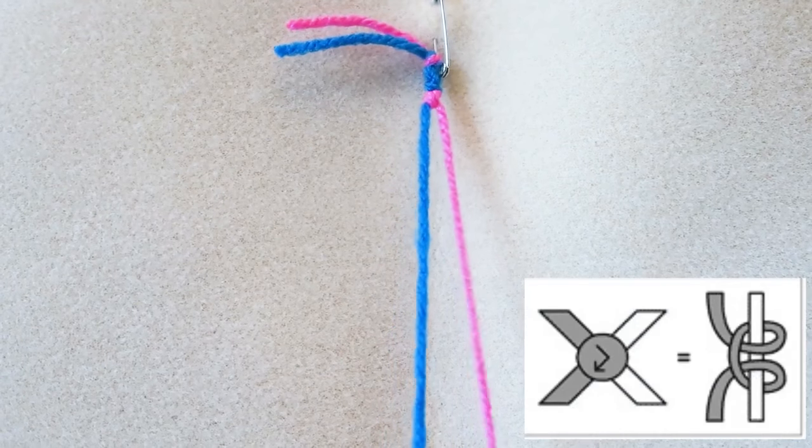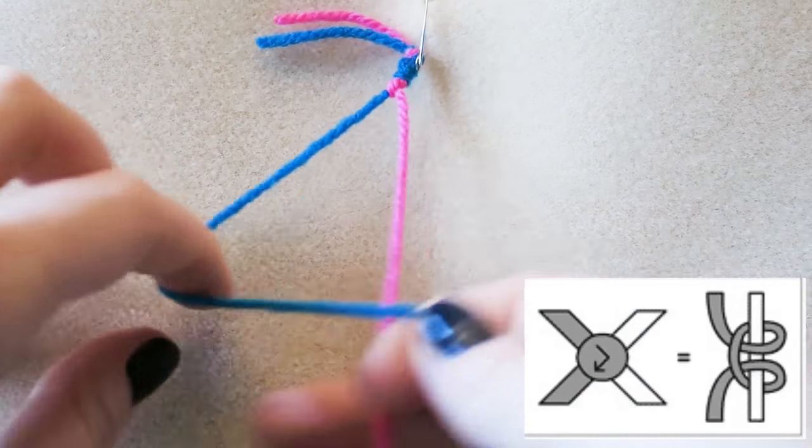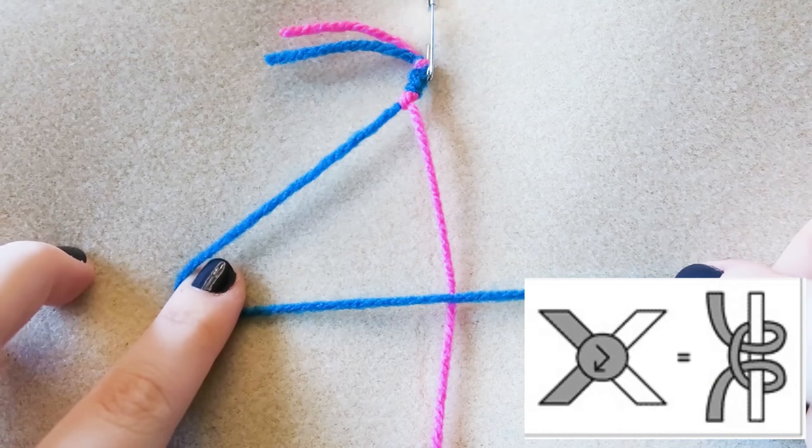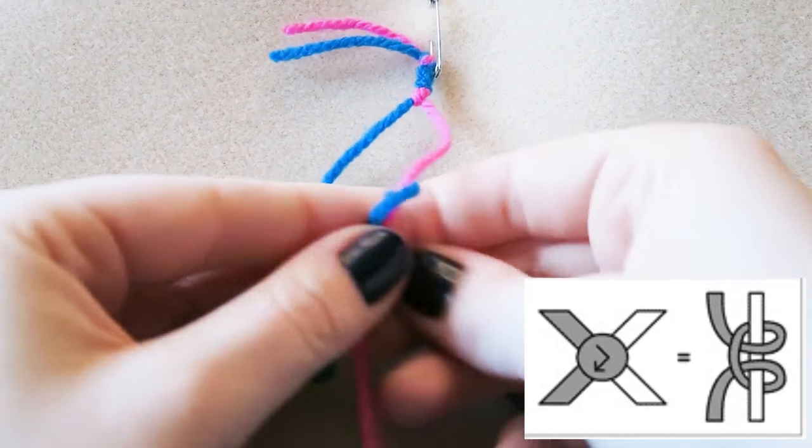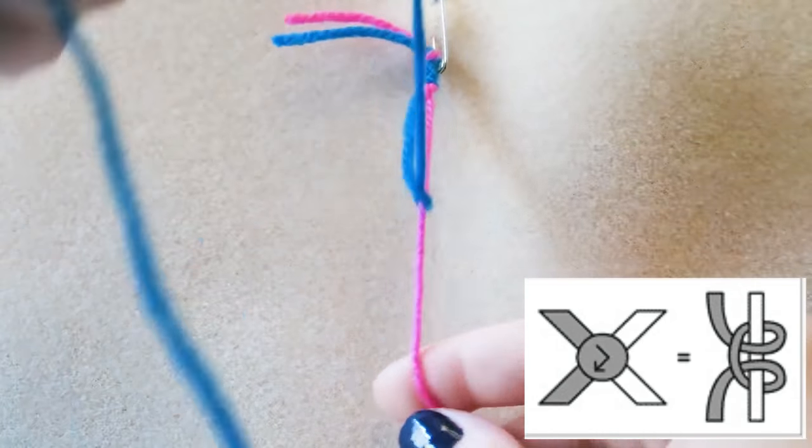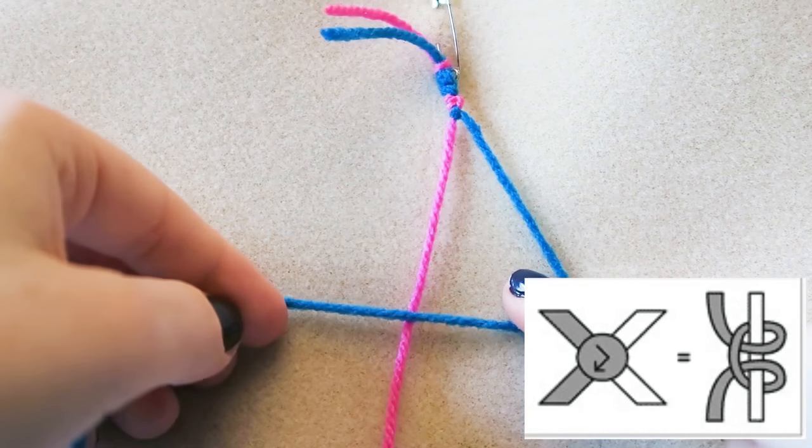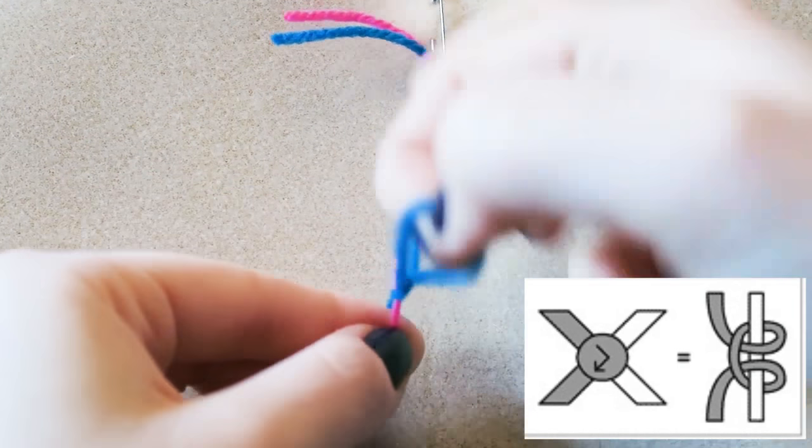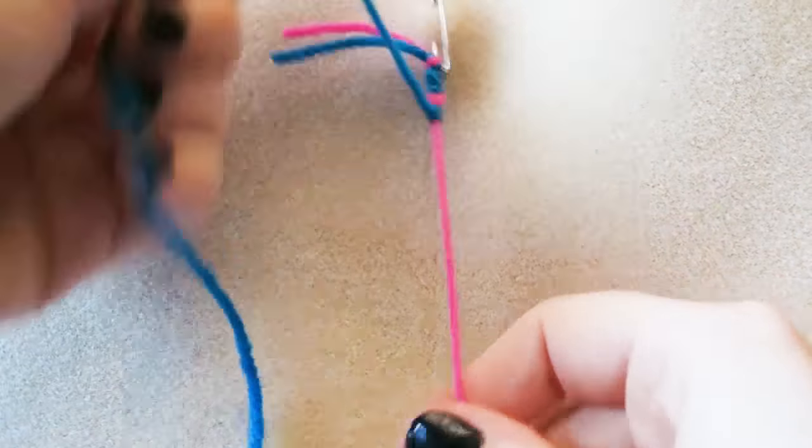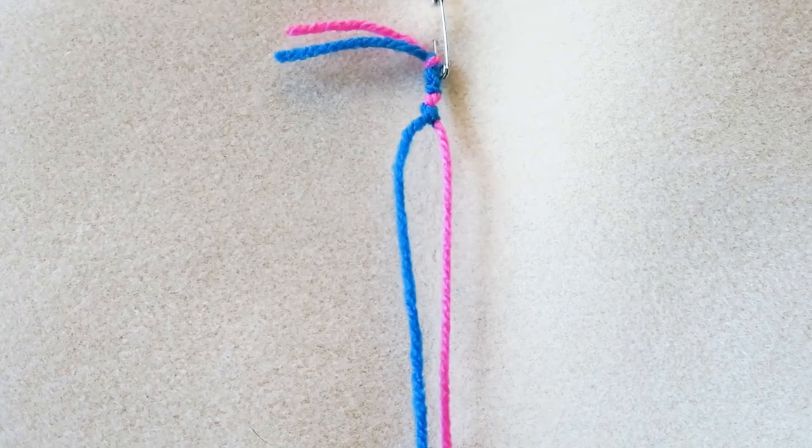And then finally, the last knot is the forwards-backwards knot. So make a forward four shape with the thread on the left hand side. And then for the backwards part, you make a backwards four shape and pull it up like that.